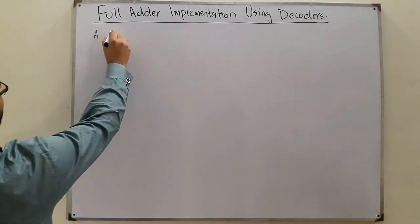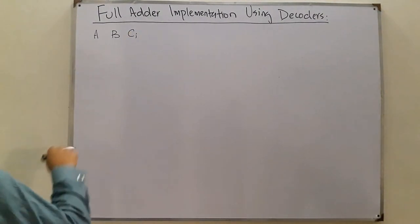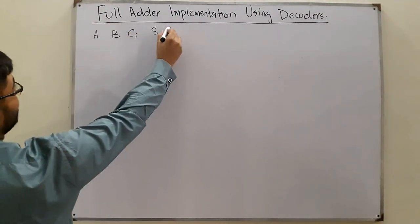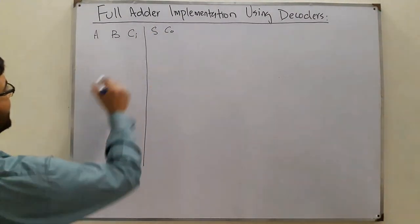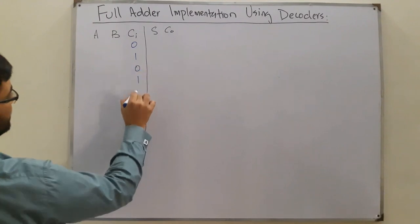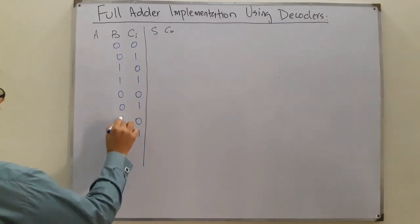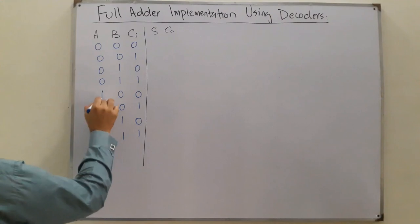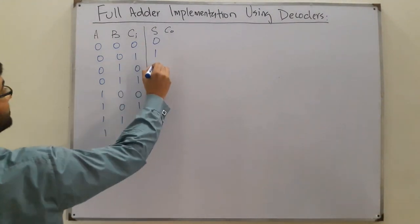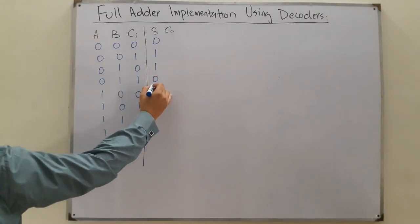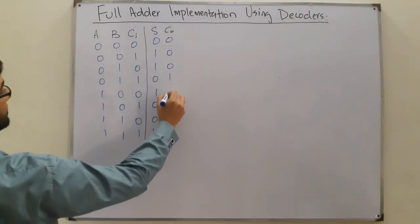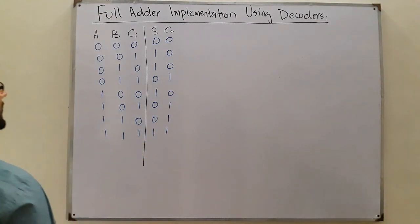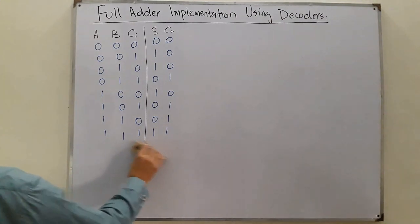Let's say we have A, B, and C input, and then the sum and the carry output. Now you know the truth table for it. This is the truth table for the full adder.